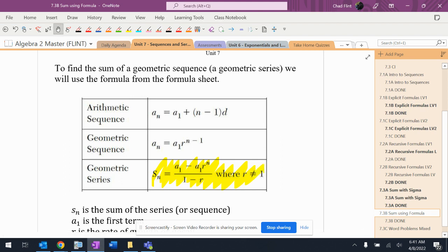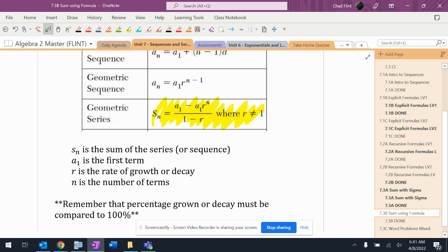Pretty much everything in there is the same as we've been doing. The only thing that we haven't done yet is Sn is sum of the series or sequence. A1 is still the first term, r is still the rate of growth or decay, and n is still the number of terms.